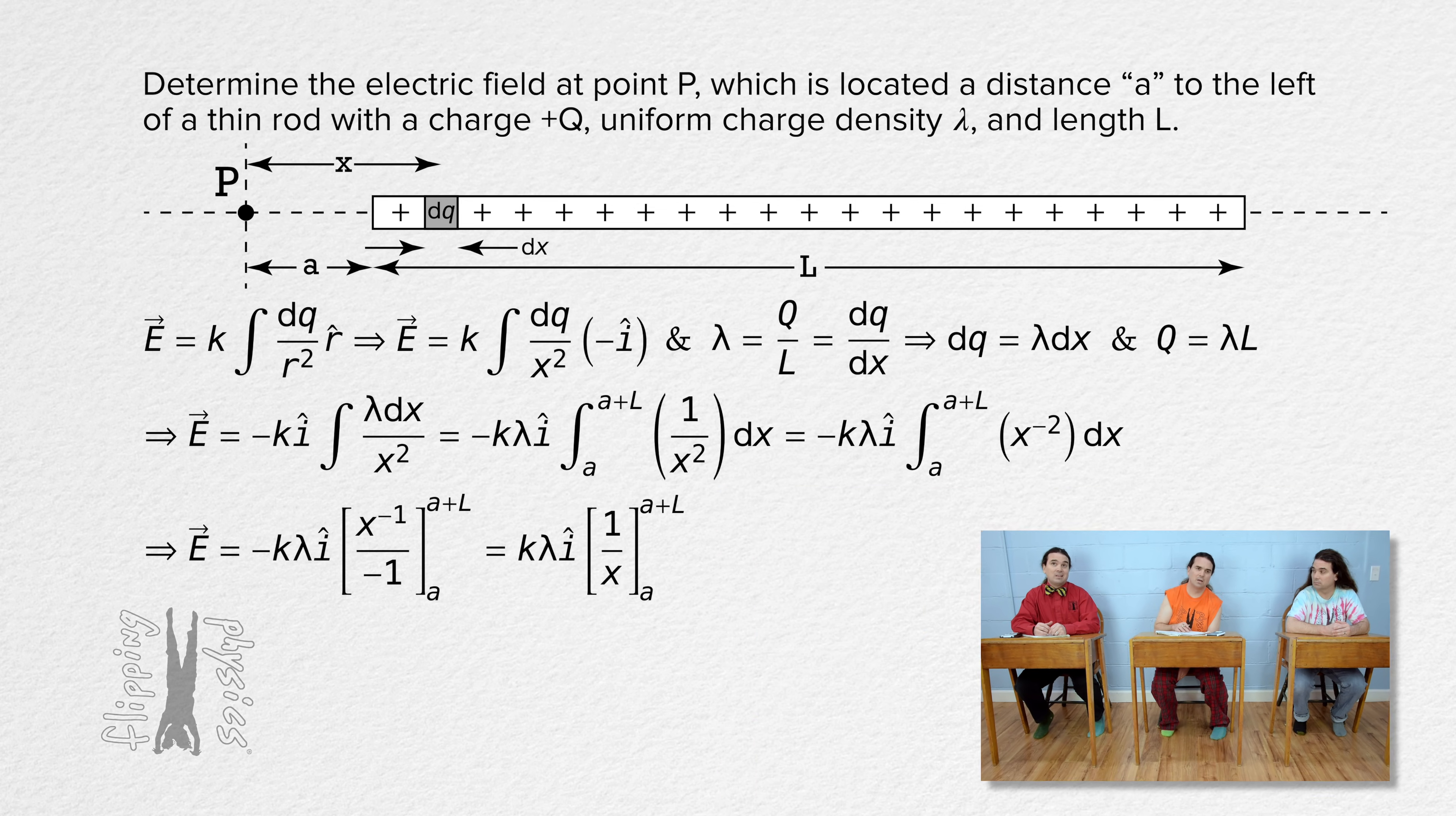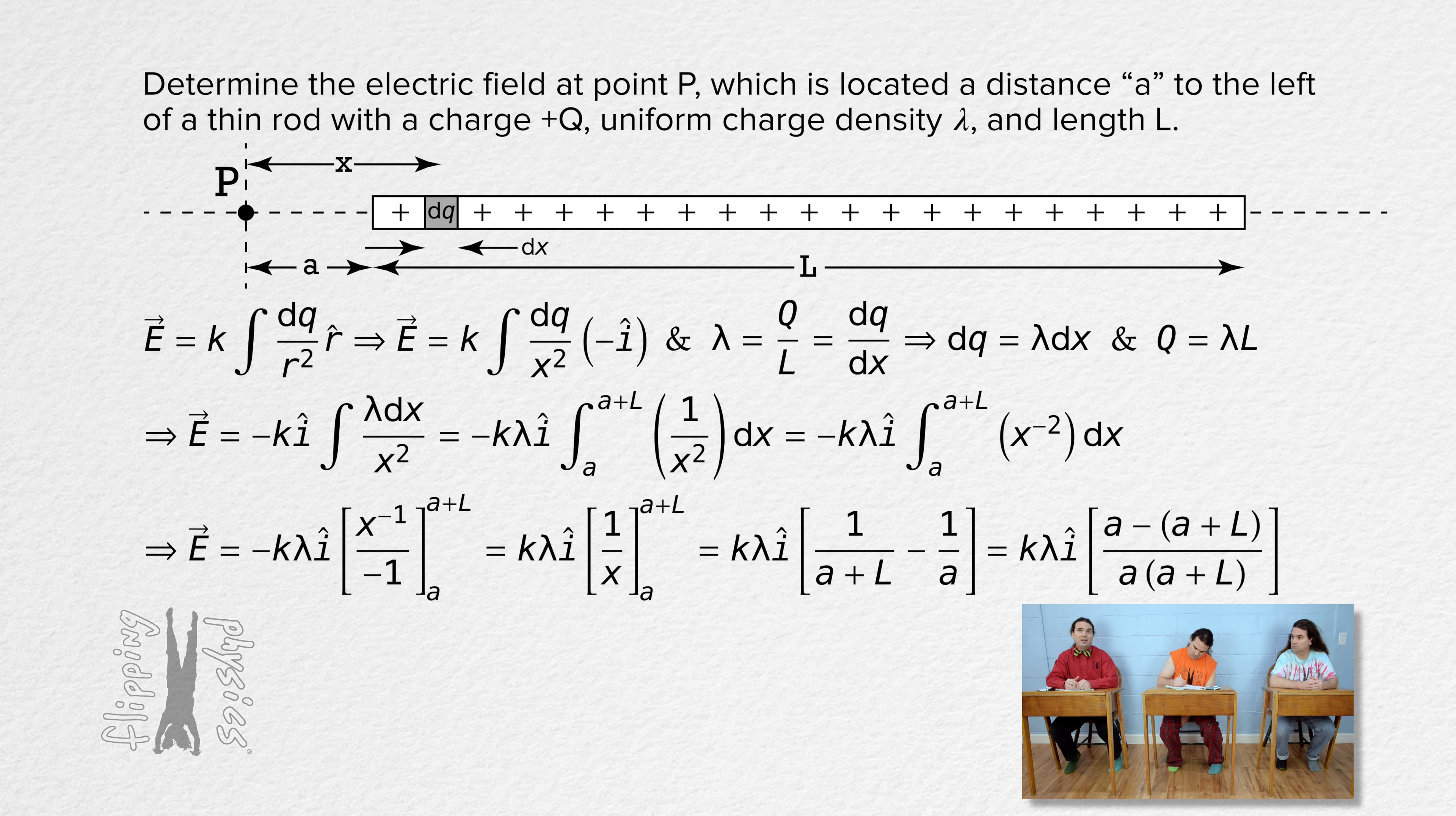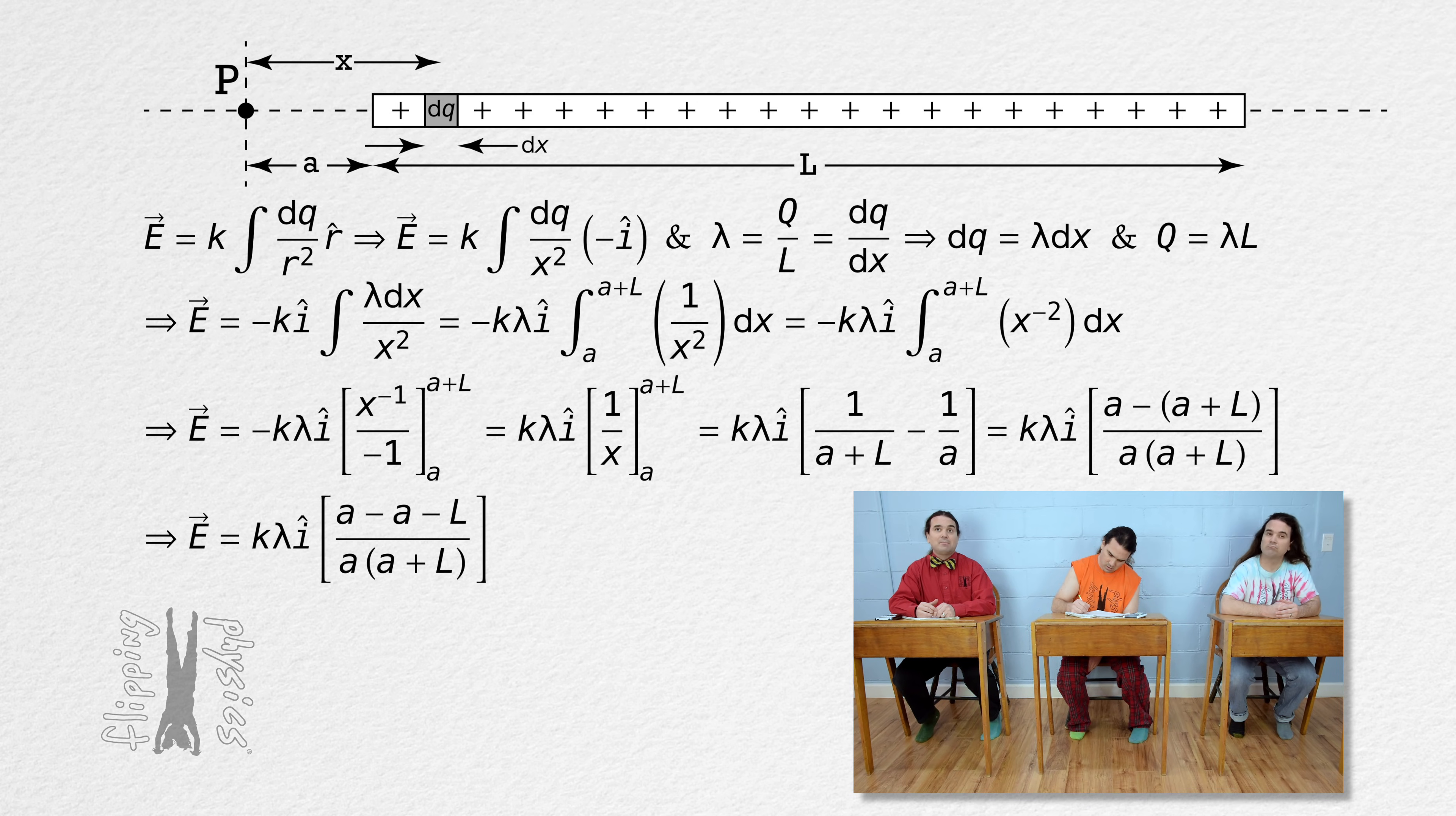We can substitute in our limits, solve for a common denominator in the brackets. In the numerator we have a minus a minus capital L. That means the electric field at point P equals negative Coulomb constant times linear charge density times the length of the rod all divided by the quantity A times the quantity A plus capital L all times unit vector i.